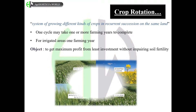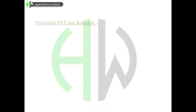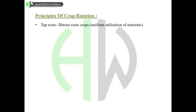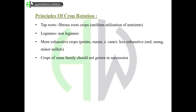Principles of crop rotation: for tap-rooted and fibrous-rooted crops, there should be uniform utilization of nutrients. Legumes should be followed by non-legumes in crop rotation. More exhaustive crops include potato, maize, and sugarcane; less exhaustive crops include urd, moong, and minor millets. Crops of the same family should not be grown in succession.